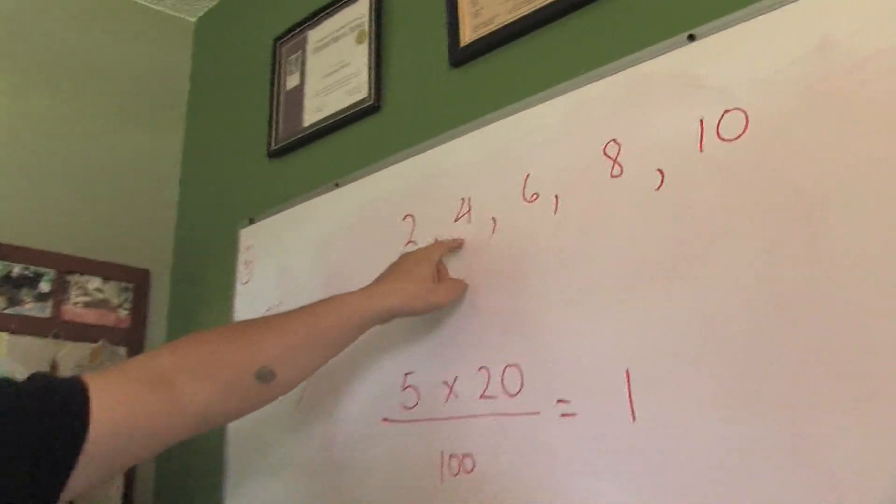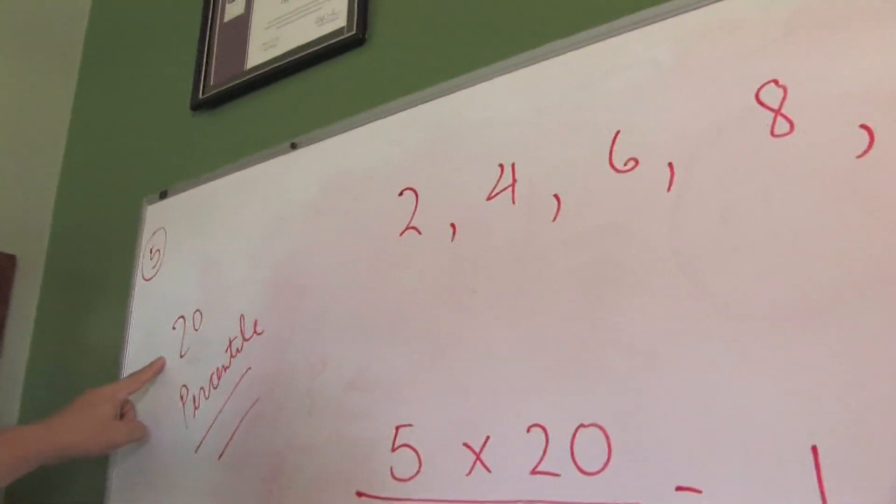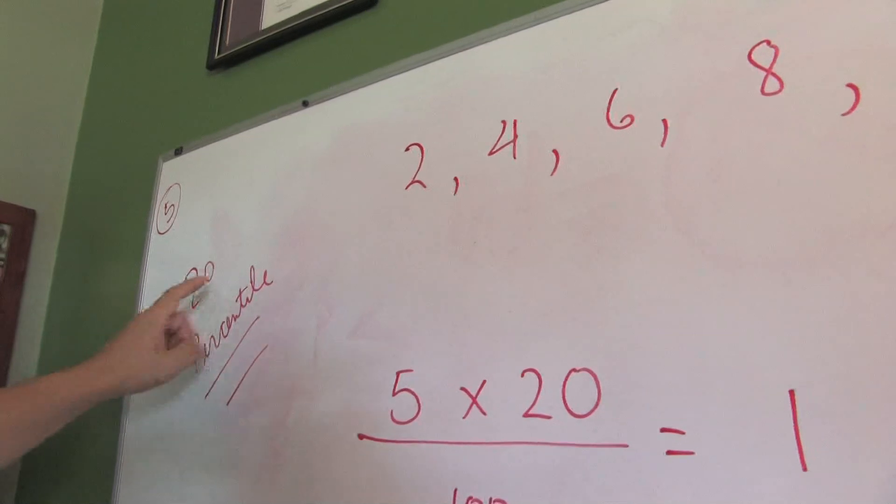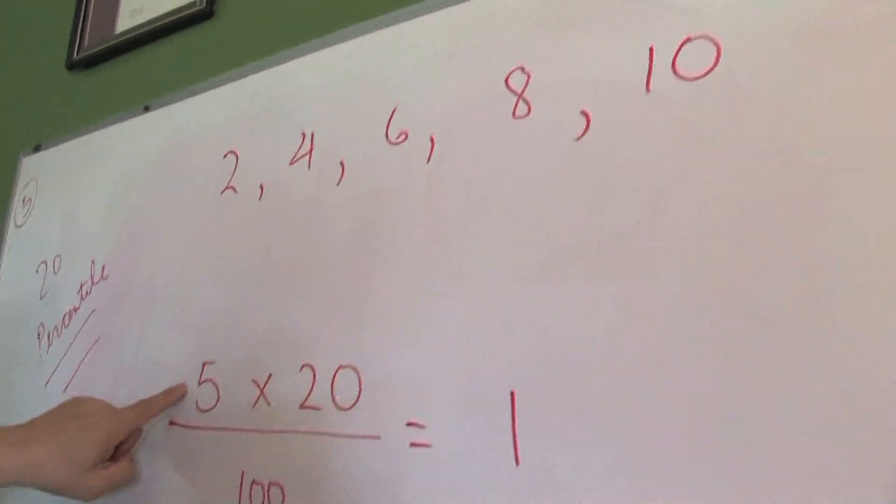Let's say you have these five numbers and you want to calculate the 20th percentile. This is what you do. Count how many numbers you have: 1, 2, 3, 4, 5. Write that number down.